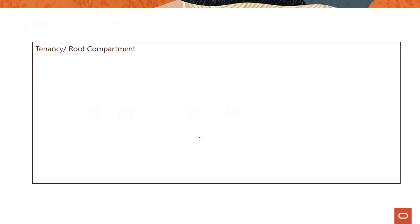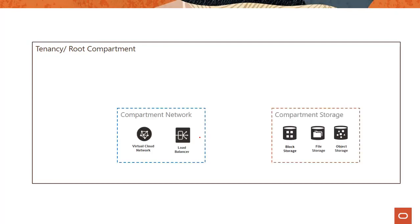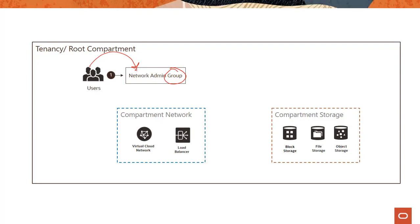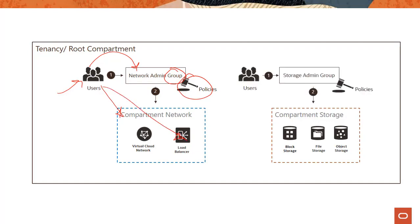Looking at the picture from the beginning of this module: you have your account with two compartments, network and storage. You have a set of users — network admins. Step one: create a group called network admin group and add those users. Step two: write a policy for that compartment so they can access those resources. The same applies for storage admins in a different compartment.